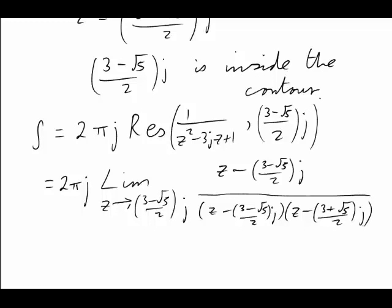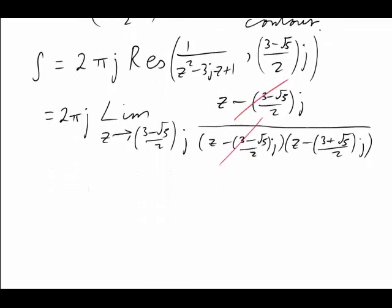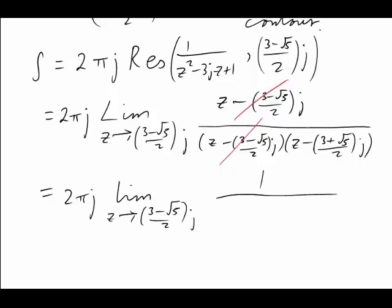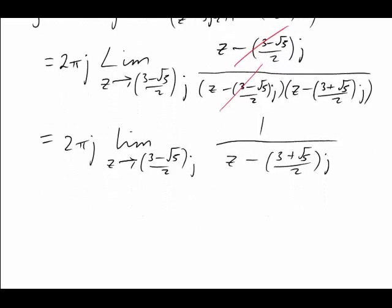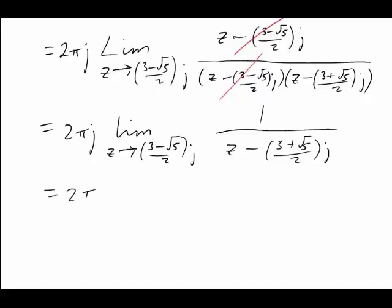It looks complicated until we realize that, as always, it's been designed so that the top cancels with one of the factors on the bottom. Now we can simplify the expression quite a bit. It becomes 2πj times the limit as z approaches (3 - √5)/2 × j of 1 over [z - (3 + √5)/2 × j]. We substitute the value of z that's required, and then the limit is no longer needed once we've made that substitution.